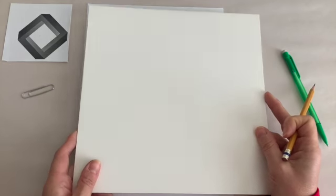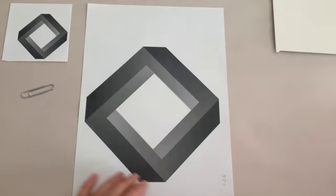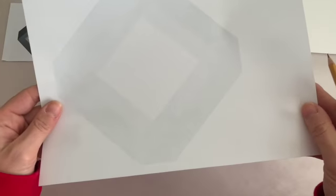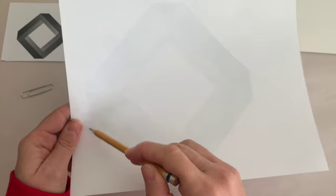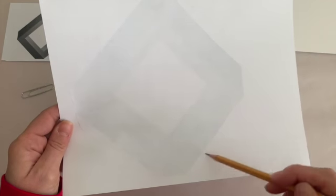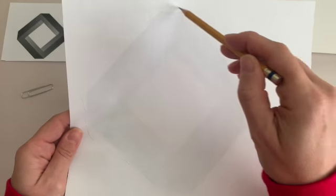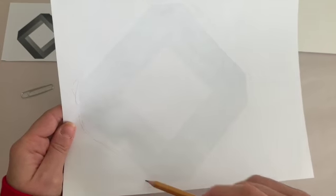Take your copy and flip it over. You should be able to lightly, if you hold it up and it's light outside—if you're in a dark room it's gonna be tough—you want to just loosely outline with your pencil where that shape falls on the other side of the paper.